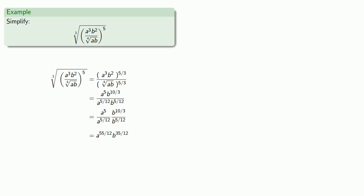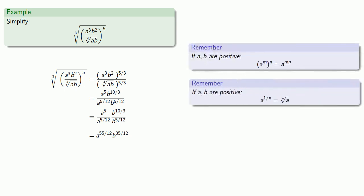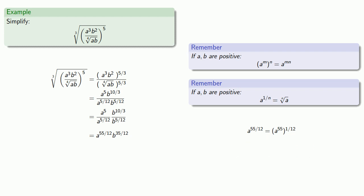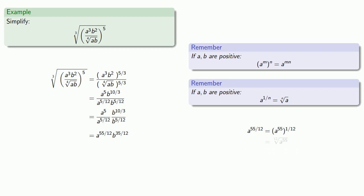Finally, we may want to write the result without fractional exponents. We can rewrite a to the fifty-five twelfths as a to the fifty-five, all to the one-twelfth power, which is a fractional exponent and therefore translates into a root. Likewise for b to the thirty-five twelfths.